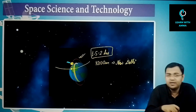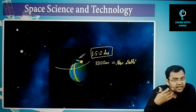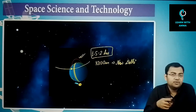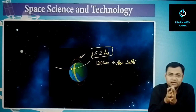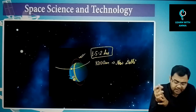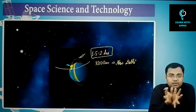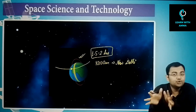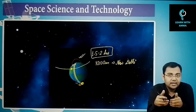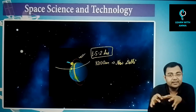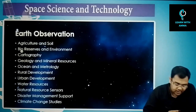Sun-synchronous orbit has a very special application: when scientists need to make observations of a given place over a long duration, they don't want data collected at random times. They need precise data at a consistent local time from that location.